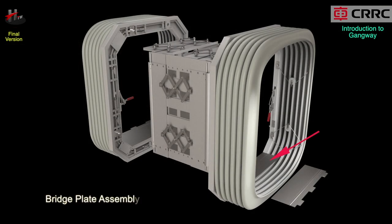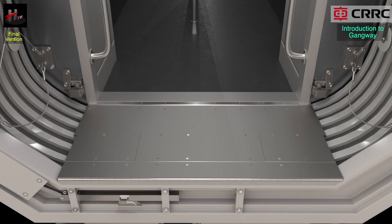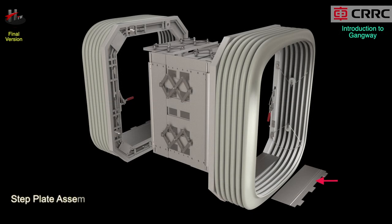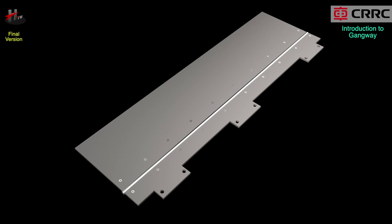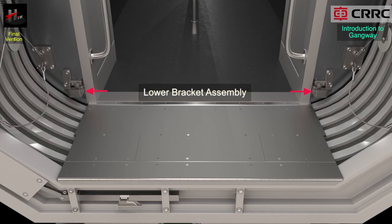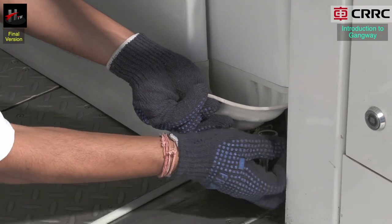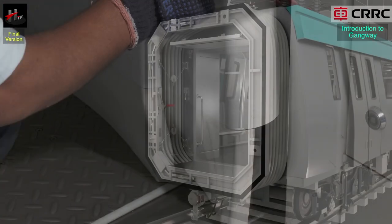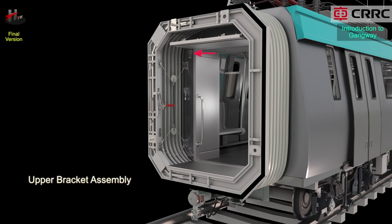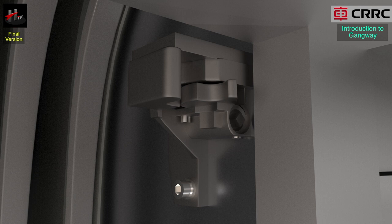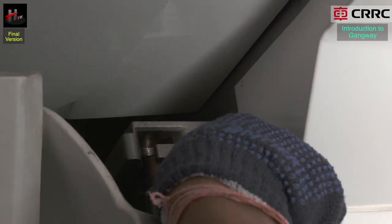The bridge plate assembly, the step plate assembly, and the lower bracket assembly. The lower bracket assembly locks the side cladding panel assembly to the gangway on the lower side. The upper bracket assembly locks the side cladding panel assembly to the gangway from the upper side.